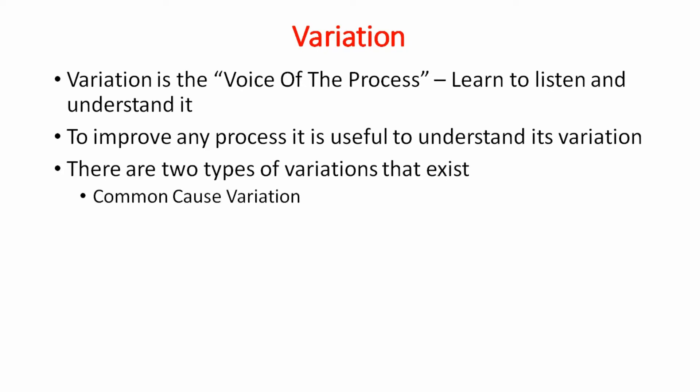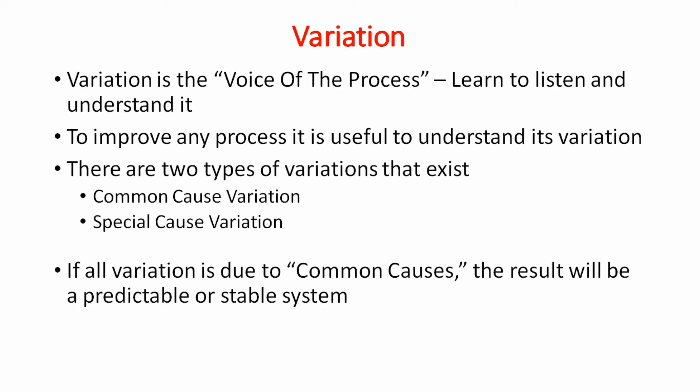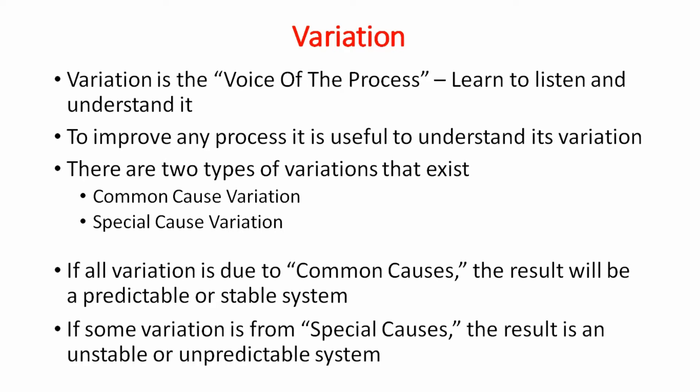There are two types of variations that exist: common cause variation and special cause variation. If all variation is due to common causes the result will be a predictable or stable system. If some variation is from special causes the result is an unstable or unpredictable system. Let me give you an example to make you understand this better.